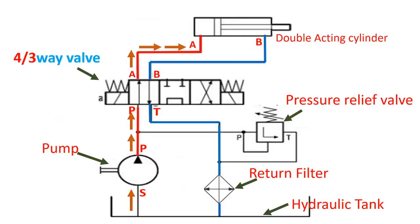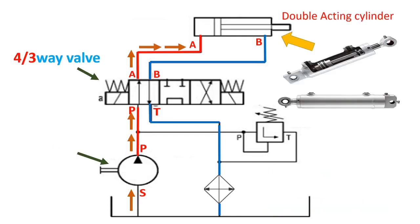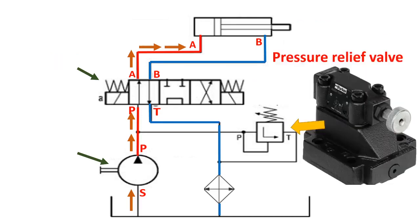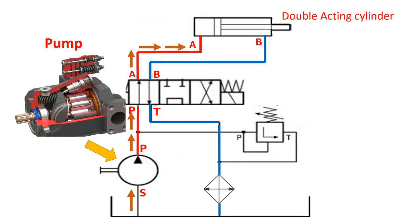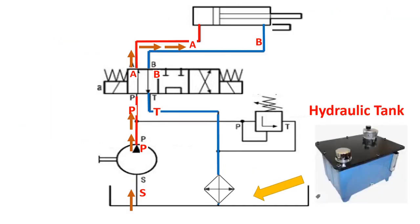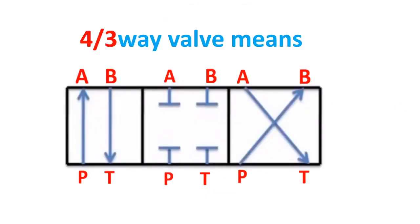Hydraulic is derived from the Greek word hydro, meaning water, and aulos, meaning pipe. Now let's discuss the components of a hydraulic system: the double-acting cylinder, four three-way directional control valve, pressure relief valve, hydraulic pump, and hydraulic filter. Before we proceed on how to read a hydraulic schematic diagram, let's first discuss the directional control valve, as it is the most important component of the hydraulic system.